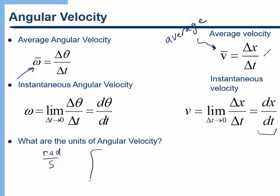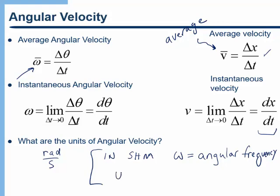I want to remind you of something from simple harmonic motion, where we also used omega and called it angular frequency. The unit we used for angular frequency was seconds to the minus one. You might ask why we use the same variable for two different things — angular frequency and angular velocity. The reason is that mathematically they're defined the same way: 2π times the frequency of the motion. It's just that in simple harmonic motion, an object goes back and forth so we call it angular frequency, whereas in rotation an object goes around in a circle so we talk about radians per second.